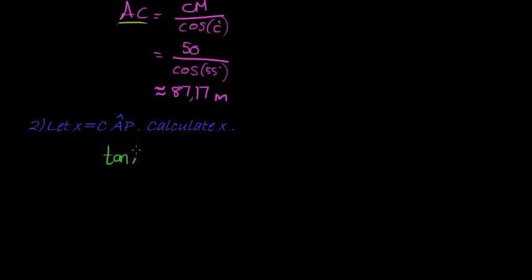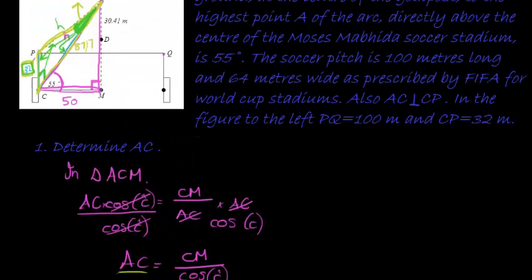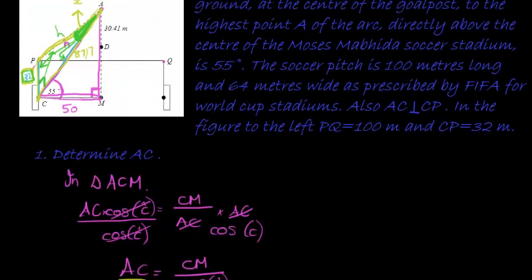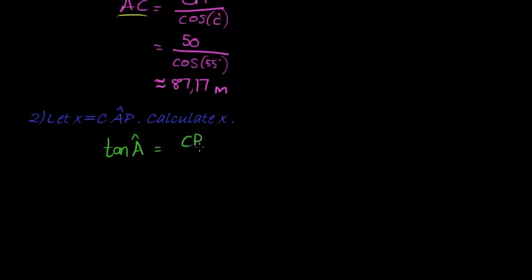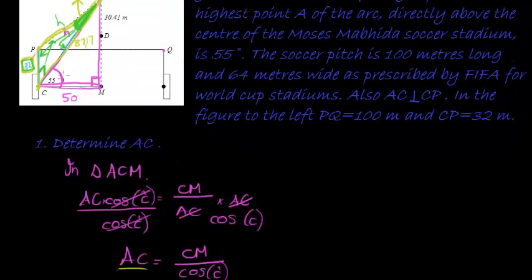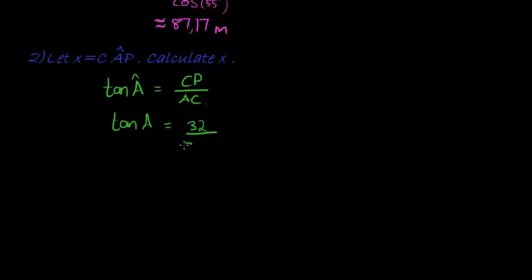So, we'll say, well, tan of angle A is equal to opposite, which is CP over adjacent, which is AC. So, CP over AC. Then we would say, well, we don't know what A is. So, tan of A is still unknown is equal to, CP was 32 meters. That's that distance right there, 32. AC is what I calculated in my previous step is 87.17 meters.